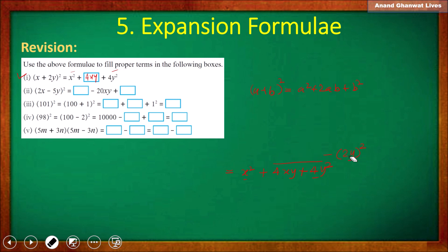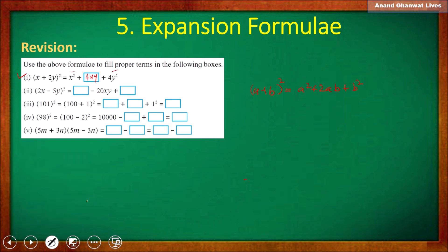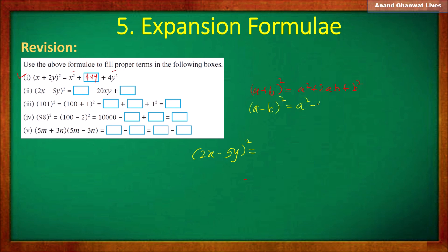Next question: the square of (2x − 5y). Since there is a subtraction of two terms here, we should use the formula (a − b)² = a² − 2ab + b².